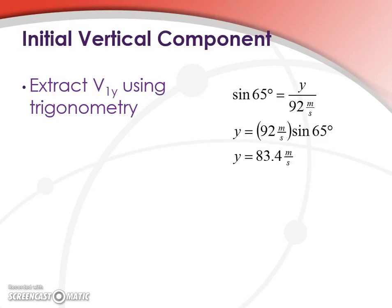So to start with we're going to extract our vertical component from our motion. So you'll recall that from SOHCAHTOA we get sine 65 degrees equals y over 92 meters per second. Rearranging, y equals 92 meters per second times sine 65 or 83.4 meters per second. So again this is our vertical component of our motion. How fast the cannonball is going up at point of release.